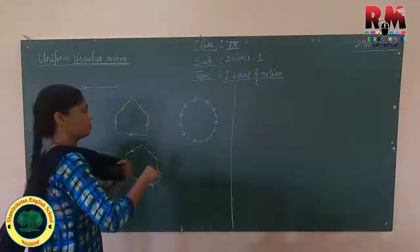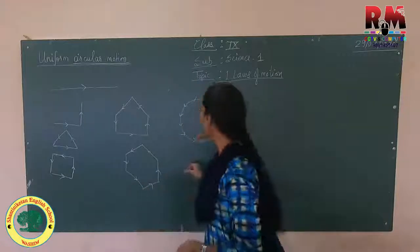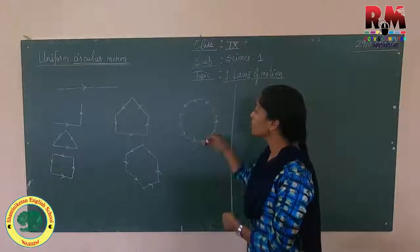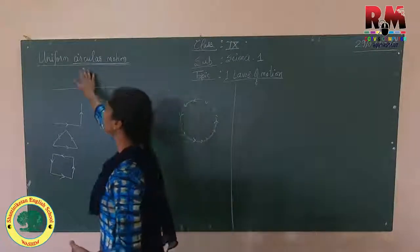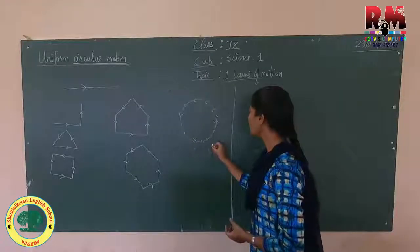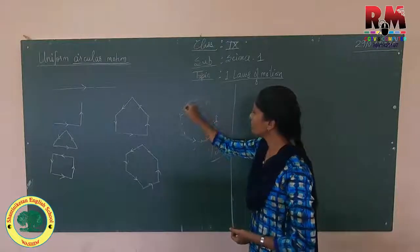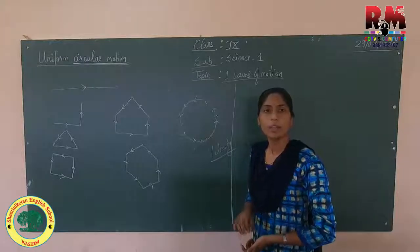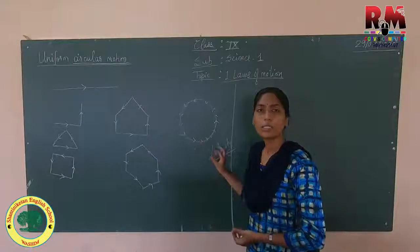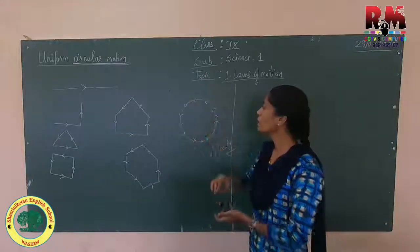Now, Uniform Circular Motion. In Uniform Circular Motion, the object moves with a constantly maintained same speed — constant speed. That motion is said to be Uniform Circular Motion. But what about velocity? If you consider individual points, the direction is continuously changing, and we know that velocity depends on direction also. Speed does not depend on direction. So in Uniform Circular Motion, the speed is constant.